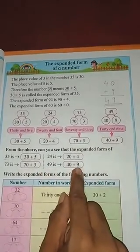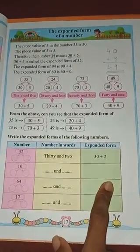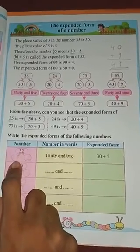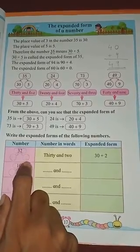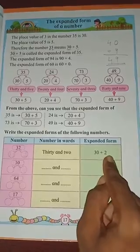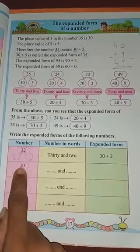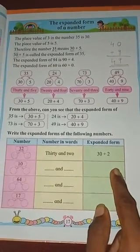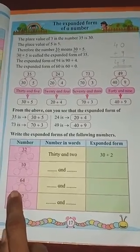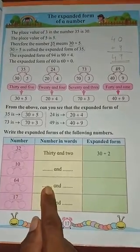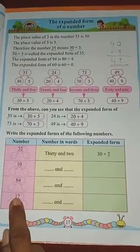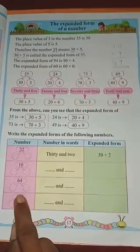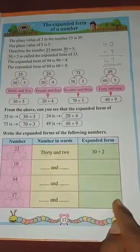For example, 49: 40 plus 9 is the expanded form of 49. Now you will fill in the blanks. For 32: 3 is in the tens place — 30 — and 2 is in the units place — 2 — so the expanded form is 30 plus 2. For 10: 1 is in the tens place — 10 — and 0 is in the units place — 0 — so the expanded form is 10 plus 0. For 64: 6 is in the tens place — 60 — and 4 in the units place — so 60 plus 4. For 17: 1 is in the tens place — 10 — and 7 in the units place — so 10 plus 7.